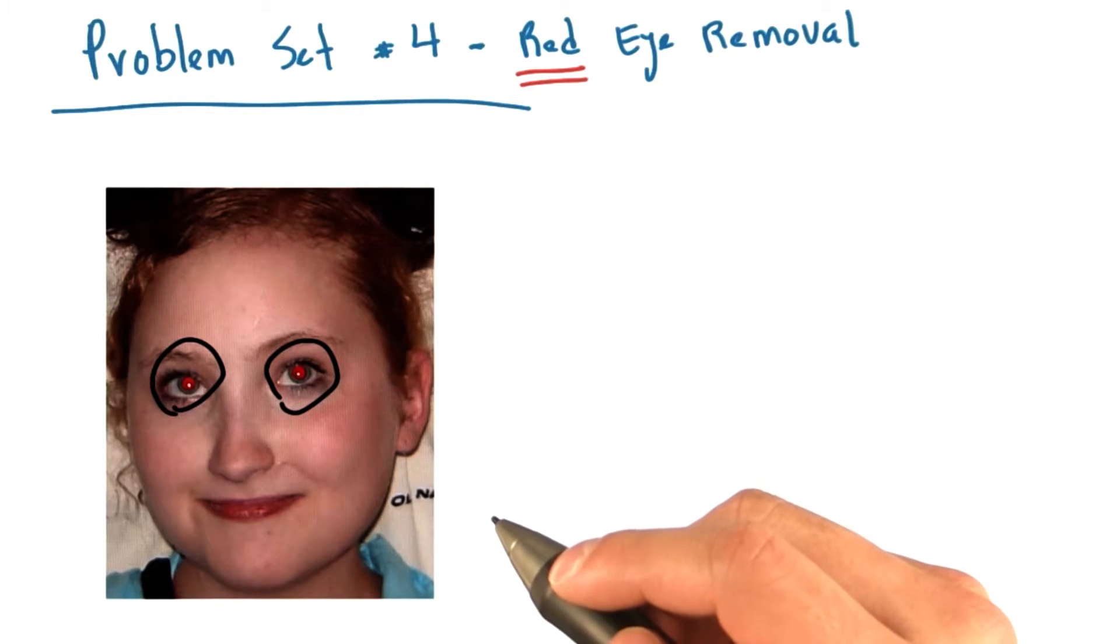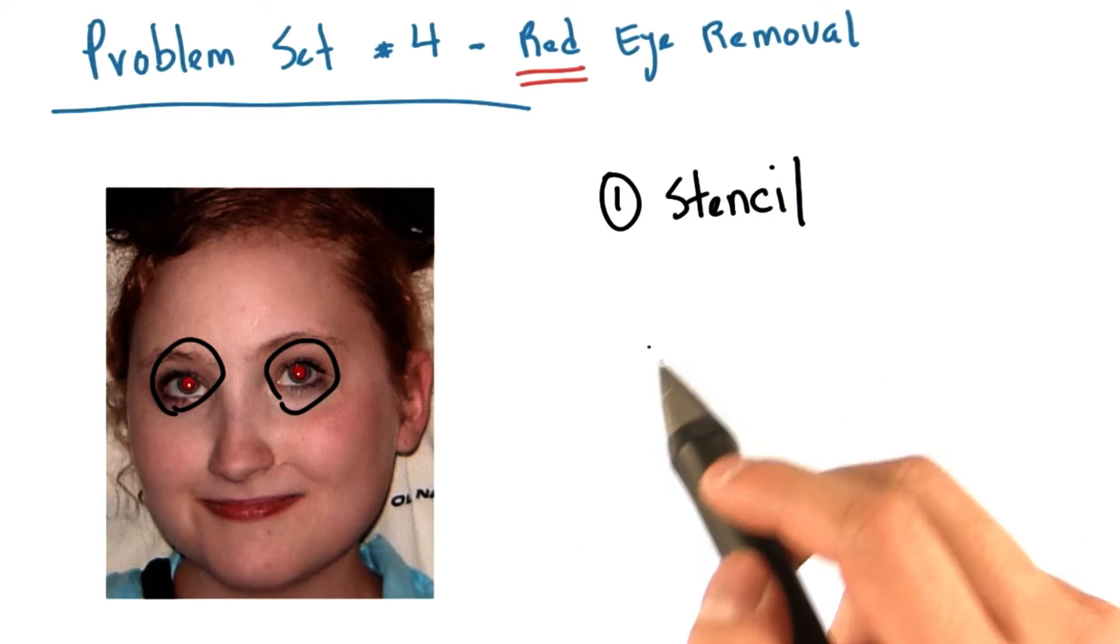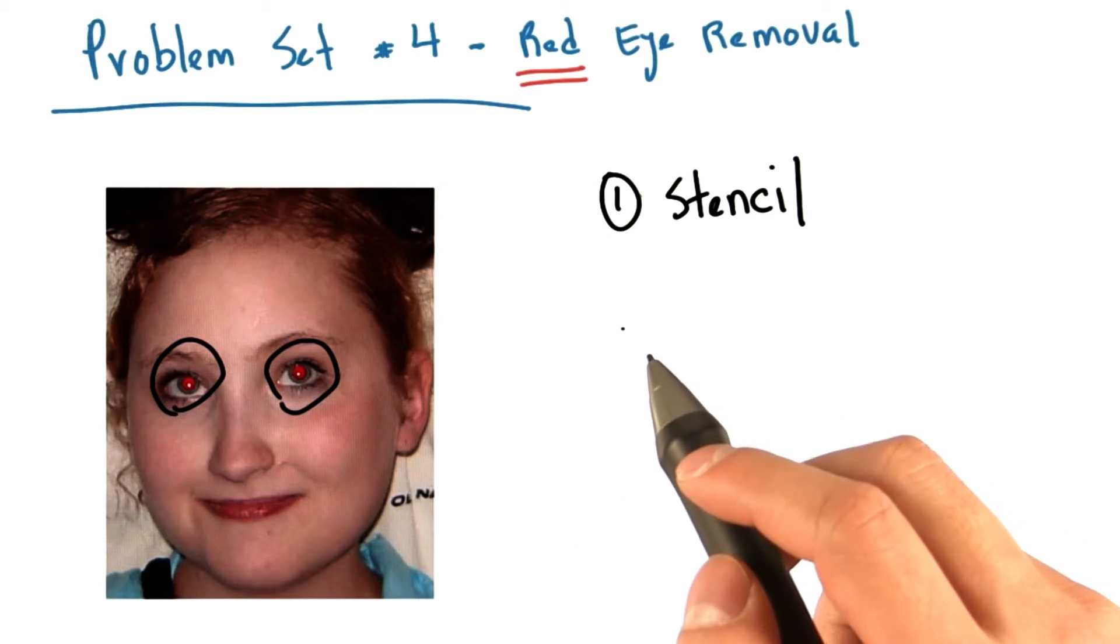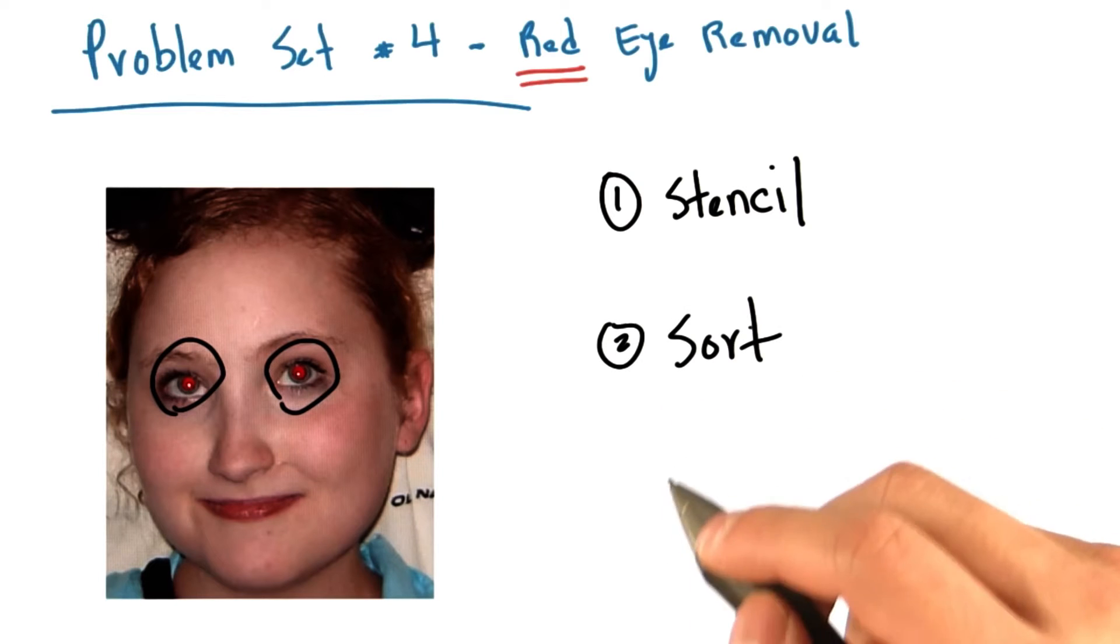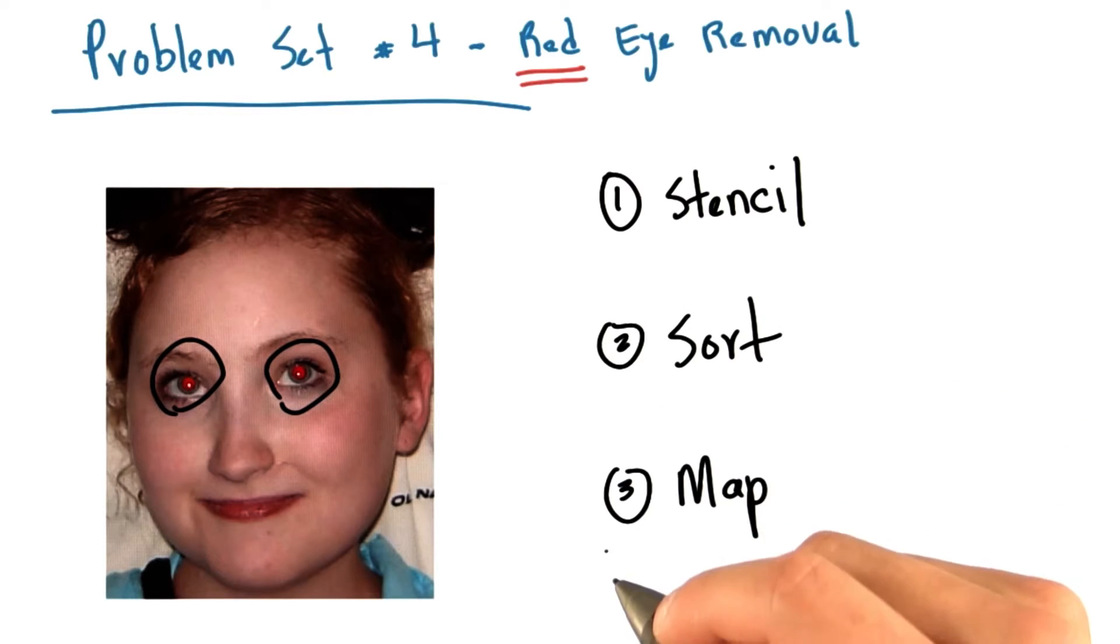You will be implementing a simple algorithm for red-eye removal that factors nicely into three different parallel operations. The first operation is a stencil computation over the image. The second is a sort, and the third is map.